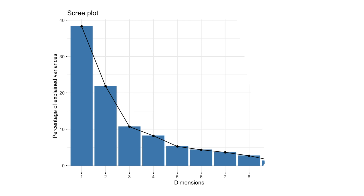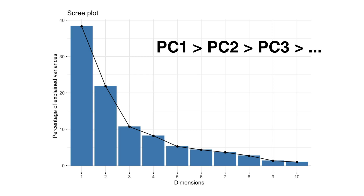What's powerful about this is that since we're constantly capturing as much variance as possible in each component, and doing so uniquely in each one, this naturally creates a ranking. The first principal component, PC1, captures the most variance. The second, PC2, captures the most of what's left, and so on.